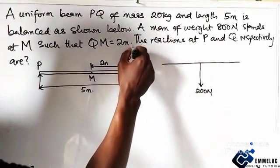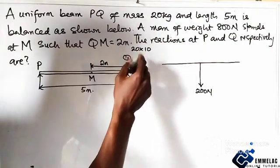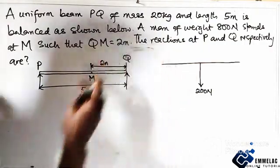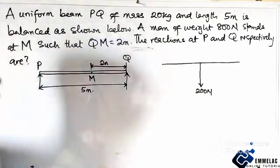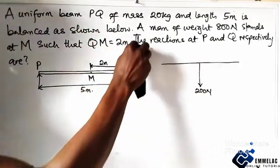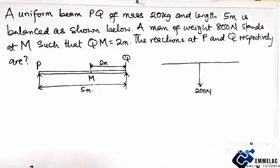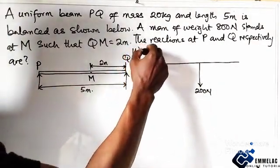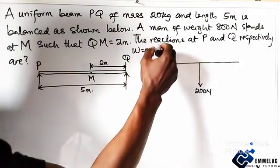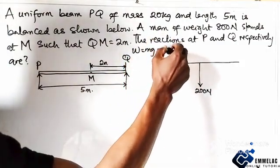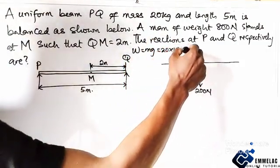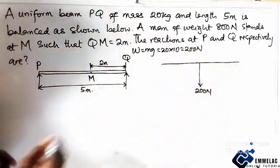How do I get 200? That would be 20 times 10. You might still be wondering how I got that. Now the weight equals mass times g which is 20 times 10 would give us 200 Newton.